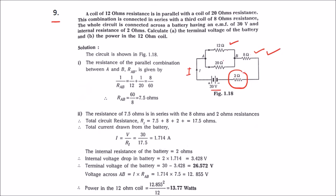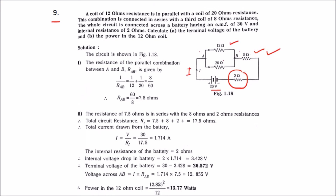Since the 12 ohm and 20 ohm are in parallel, we first find the equivalent resistance between points A and B. The formula gives: 1/RAB = 1/12 + 1/20 = 8/60, therefore RAB is 7.5 ohms.